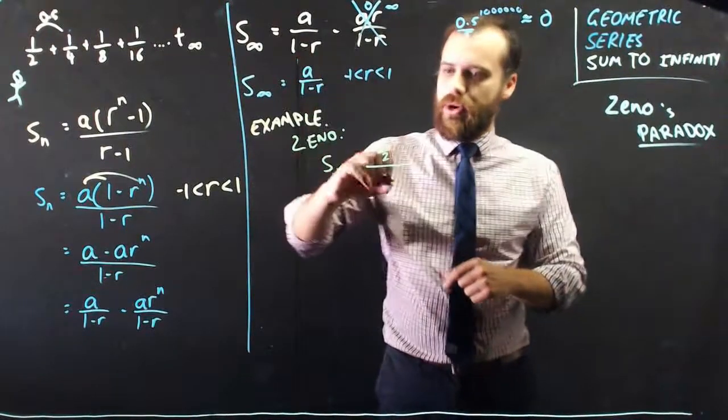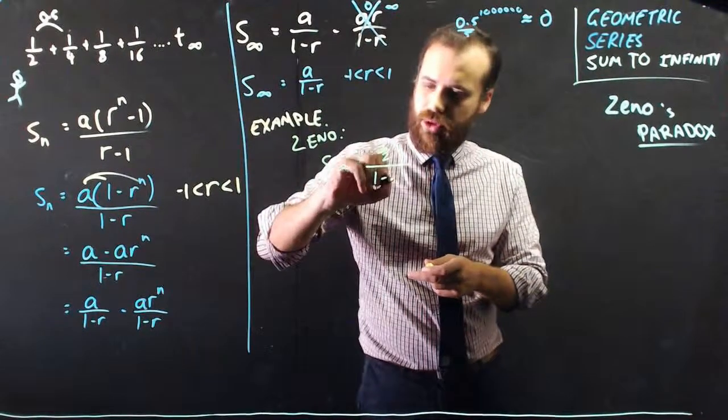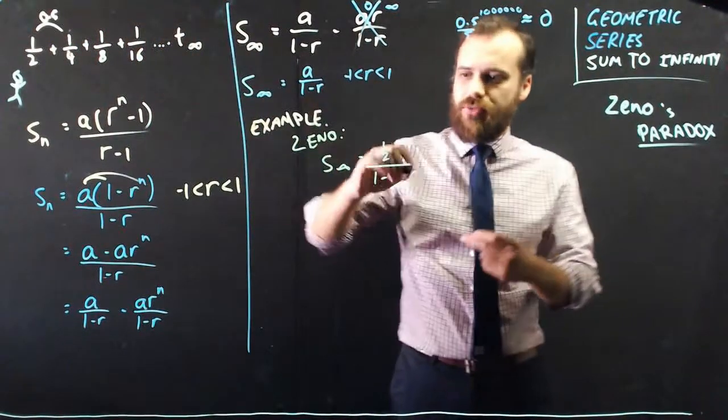Divided by 1 minus r, where 1 minus r is 1 minus, and the common ratio here, we know is 0.5 or 1 half.